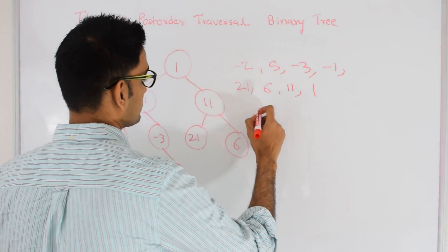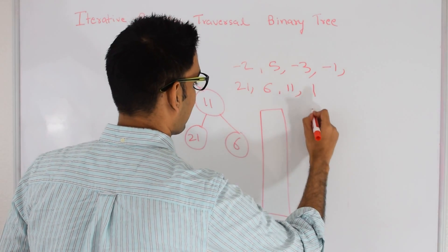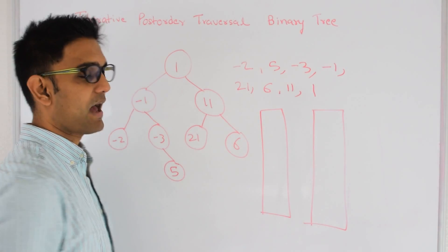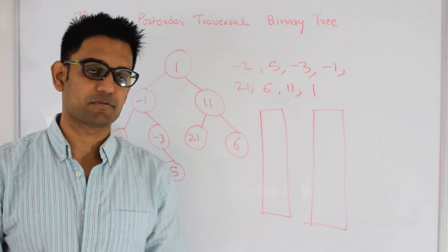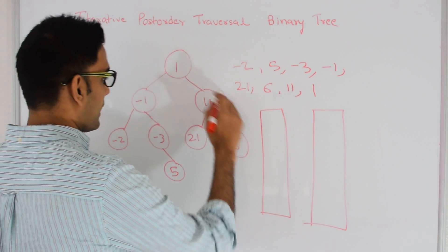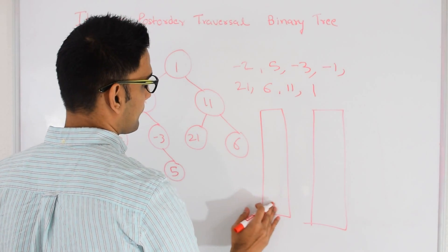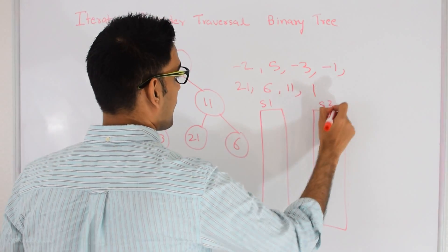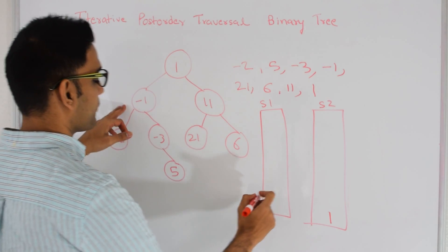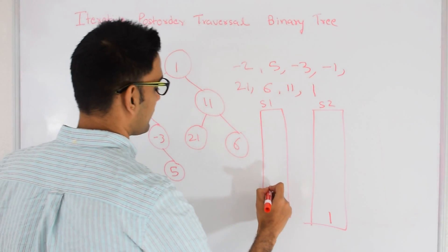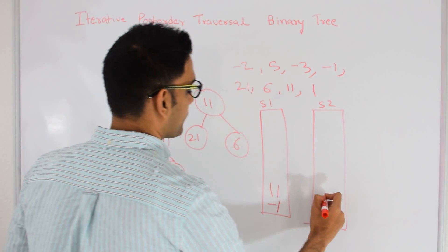Let's see how this works. I have Stack 1 and Stack 2. Stack is last-in first-out, so the element which goes in last is the first to come out. I put 1 into Stack 1, then I pop it out from Stack 1. I pop 1 out of Stack 1 and push it into Stack 2. I check if 1 has a left — we put that into Stack 1. So -1 and 11. Now I pop 11 from Stack 1 and put that into Stack 2.